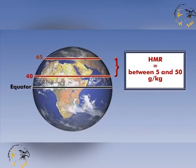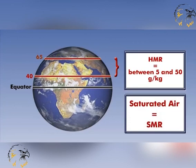In unsaturated air, the HMR remains constant with increasing height, whereas pressure and temperature decrease. Saturation mixing ratio, or SMR, is simply the HMR when the air is saturated.